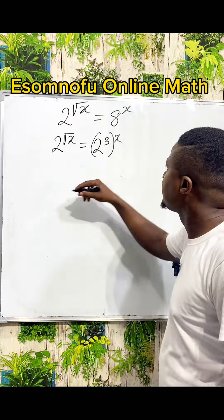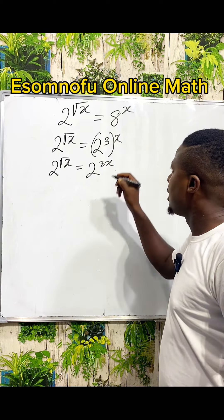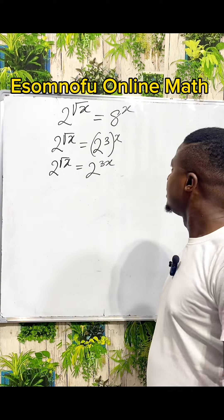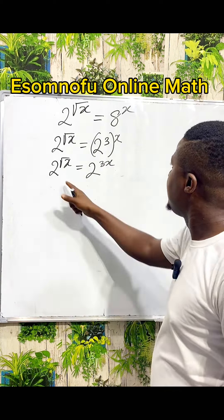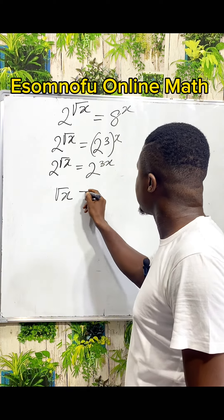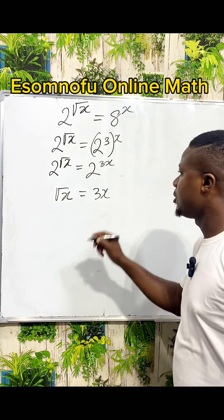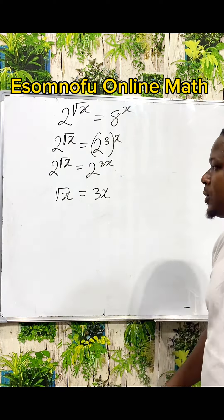So we have 2^√x equal to 2 to the power of 3 times x, which is 3x. Right now the bases are the same thing, therefore the power should also be the same. So you are not wrong if you write that square root of x is equal to 3x. Let us square both sides.